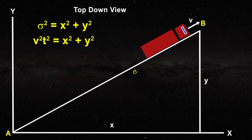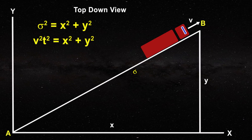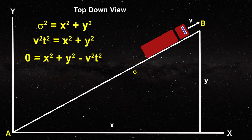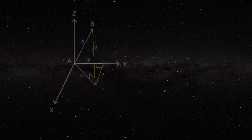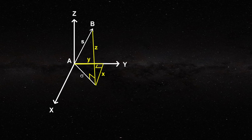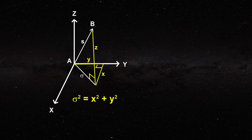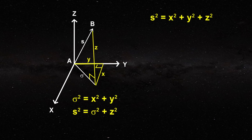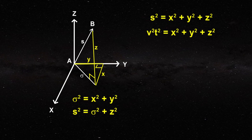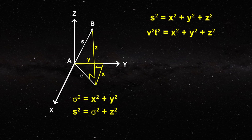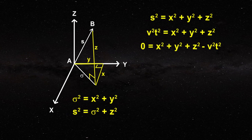Subtracting the vt term from both sides of the hypotenuse equation gives this equation, which is still the equation for the hypotenuse, not a new distance formula. Let's extend our truck's journey into three dimensions to include height. Here the hypotenuse from A to B is s. By applying the theorem of Pythagoras twice — first to get sigma from x and y, then to get s from sigma and z — we obtain this equation. Substituting vt for s results in this equation. The hypotenuse vt is not perpendicular to the x, y and z axes and is not a new dimensional coordinate. After subtracting the vt term from each side, we get this equation. Like before, this is simply the equation for the hypotenuse, not a new distance formula. Since speed v is not independent of x, y and z, the product vt is not independent of x, y and z either.